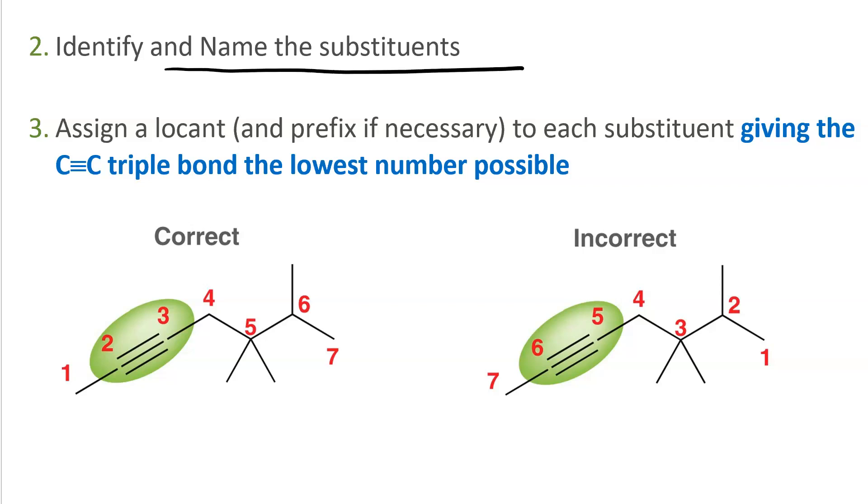Then you identify and name the substituents. Then you assign a locant to each substituent. And now the C-C triple bond gets locant priority. It wants to have the lowest number. So, here we number left to right to give the C-C triple bond the lowest locant. Two-yne is better than five-yne.